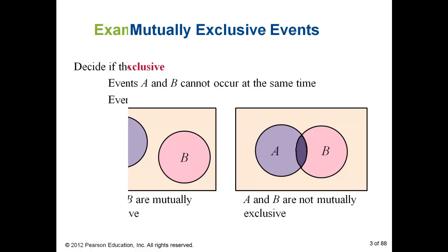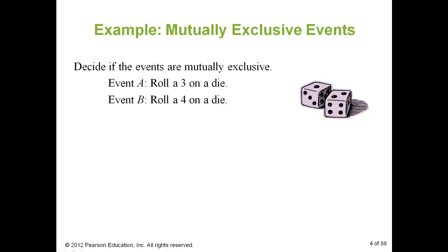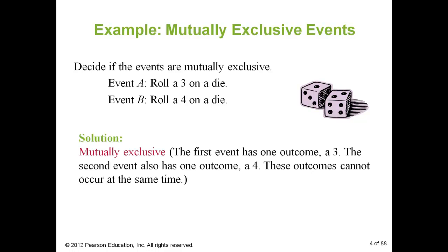Let's take a look at some concrete examples. Two events: event A is rolling a 3 on a die, and event B is rolling a 4 on the same die. Are those mutually exclusive or not? They are indeed mutually exclusive — if I roll a 3, that means I cannot roll a 4 at the same time, if I just have one die.